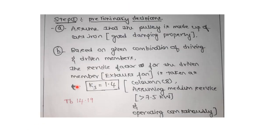In step number 1, we'll be making several design assumptions. First, the material of the pulley — assume cast iron because it has good damping properties. In step 1B, note down the value of Ks. To find Ks, you need to identify the driving unit and the driven unit. Here the driving unit is an induction motor and the driven unit is an exhaust fan. For that, refer to table number 14.19.